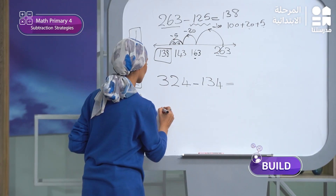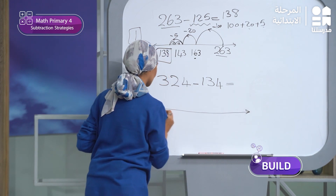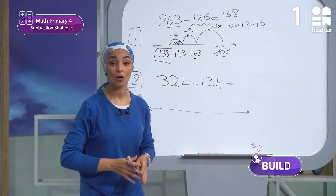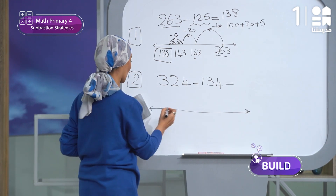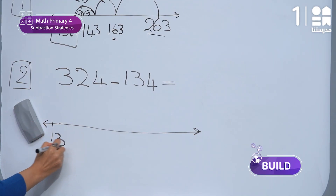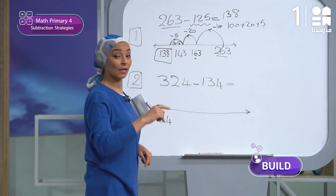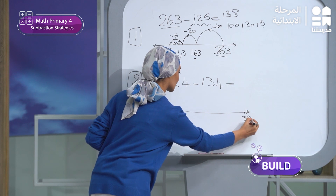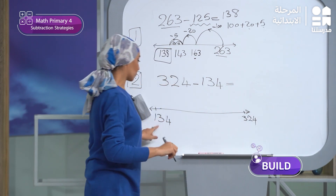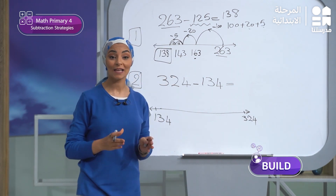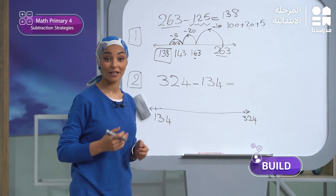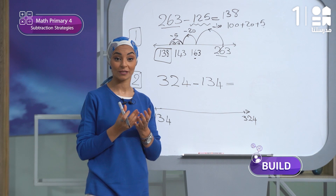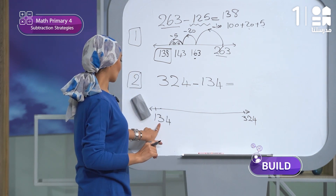First of all, I will draw the number line. But this time I will start from the small number until I reach the big number. I will write the small number here: 134. I want to reach the big number, which is 324. To do this strategy, we have to add in benchmark numbers — friendly numbers.